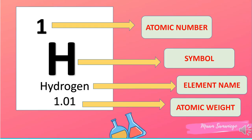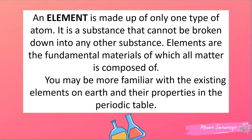Here is an example. The number above is the atomic number or the number of protons. The capital letter is the symbol, the name below is the element name, and the last one is the atomic weight. We have element hydrogen — symbol capital H, atomic number 1, and atomic weight 1.01. These are some of the information you can get using your periodic table of elements.